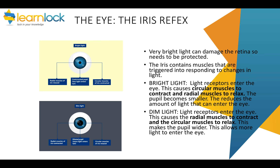Let's look at one particular response: the iris reflex. The iris reflex occurs automatically — you don't think about doing it. It's to prevent light damaging the retina and to allow you to see even when it's dark. It works because the iris — the coloured part — contains muscles that are triggered into responding to changes in light. When it's really bright, the circular muscles contract and the radial muscles relax, causing the pupil to get smaller so less light can get in and damage the eye.